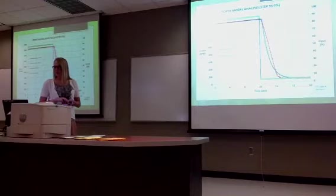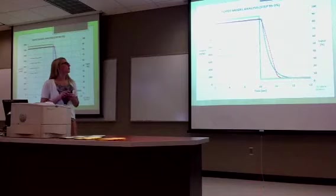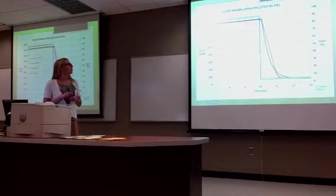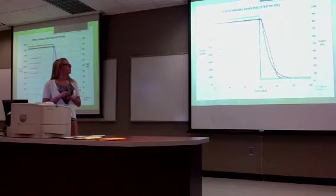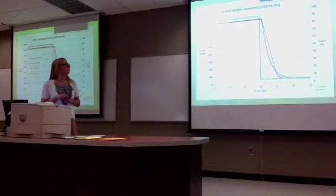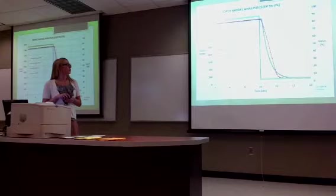Here is a step response FOPDT model analysis. It's from 95 to 5%, and the red and the blue with the circle — that's the model output and input. The experimental output and experimental input are these lines here. On the step down they vary a little bit; the step up they're closer. I'm using Chefer's just as an example for you to see.